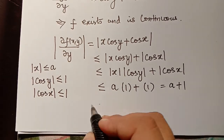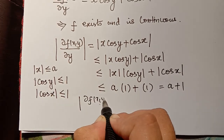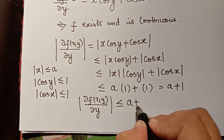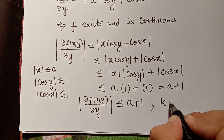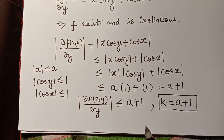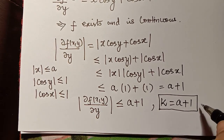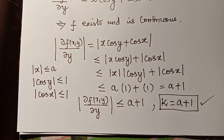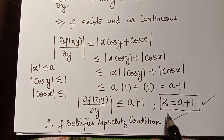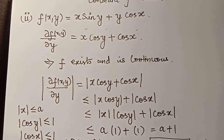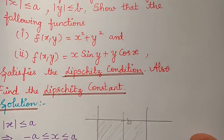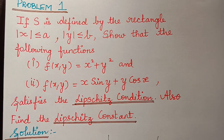Therefore, |∂f/∂y| ≤ a + 1, which is a constant k where k = a + 1. This implies that the given function f satisfies the Lipschitz condition with the Lipschitz constant k = a + 1. Hope you have understood how to solve a problem dealing with the Lipschitz condition. This is the solution of the given problem. Thank you.